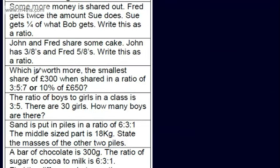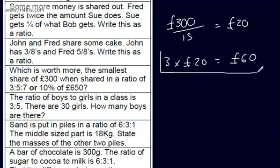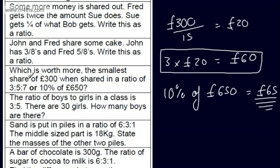Which is worth more: the smallest share of £300 when shared in a ratio of 3 to 5 to 7, or 10% of £650? For the £300 shared in a ratio of 3 to 5 to 7: that's 15 parts, so each part is worth £20. The smallest share is 3 parts, so 3 times £20 gives £60. For 10% of £650: simply divide by 10, which gives £65. So 10% of £650 is going to be greater than the smallest share when £300 is shared in a ratio of 3 to 5 to 7.